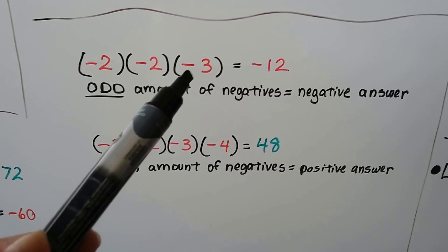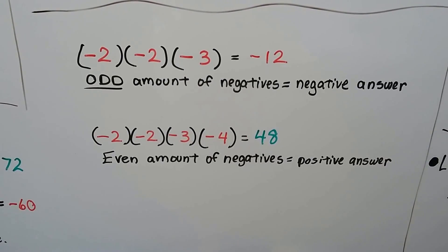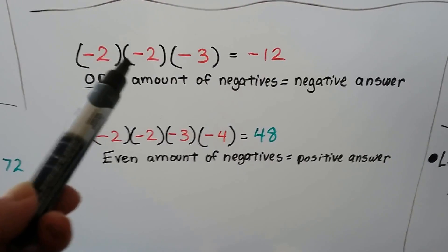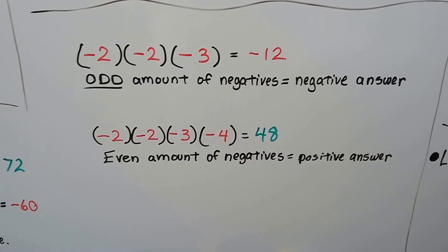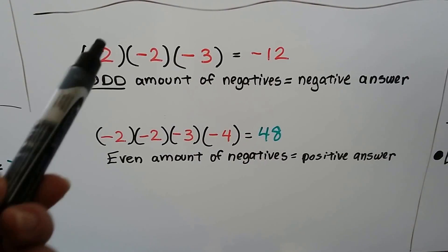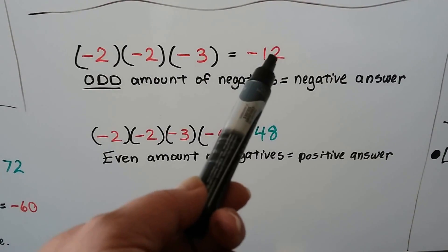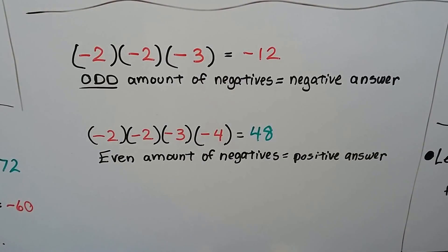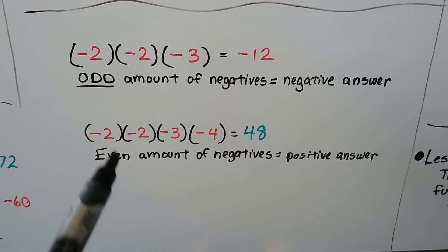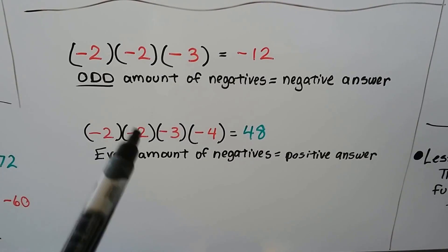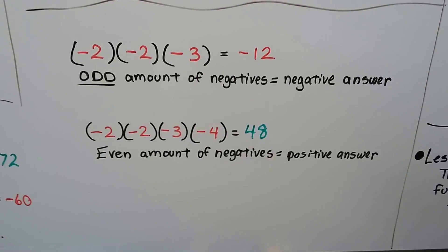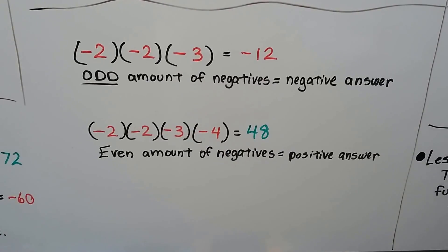We have 3 negatives multiplied together — an odd amount — so we're going to have a negative answer. Negative 2 and negative 2 pair up to make a positive 4, times negative 3. That's different signs — positive 4 and negative 3 — so we get a negative answer. When we have an even amount of negatives, these two pair up to make positive 4 and these two pair up to make positive 12. So we have 4 times 12, which is 48. It's positive.